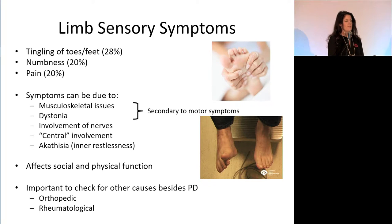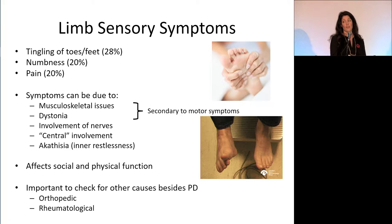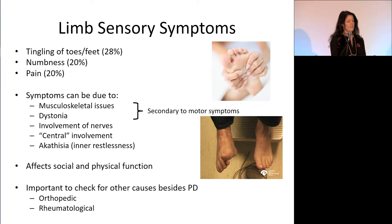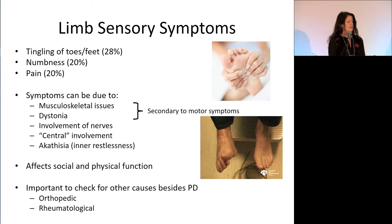People also get sensory symptoms in their limbs, particularly their legs — tingling, numbness, or pain. These can be related to motor symptoms: for example, shoulder stiffness from not swinging the arm. Dystonia — you can see the picture of the upgoing toe being extended — is when stiffness and abnormal positioning of the toe causes significant pain for people with Parkinson's and affects their ability to wear shoes. Nerves can also be affected centrally, meaning pain can come from the brain itself. Akathisia is a sense of inner restlessness that is very uncomfortable.